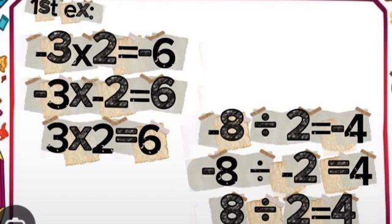So, negative 8 divided by negative 2, the answer will be positive 4 because the signs of the numbers are the same.